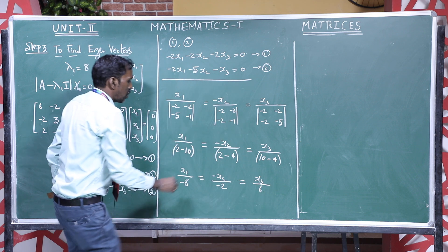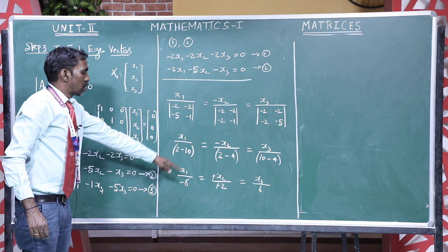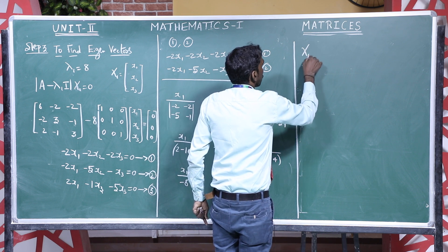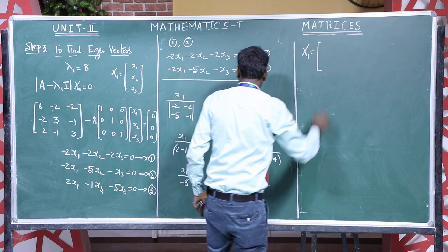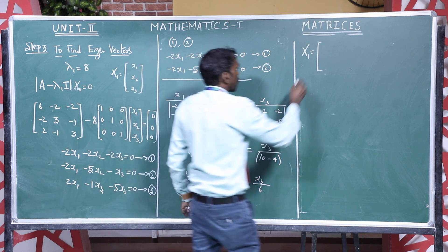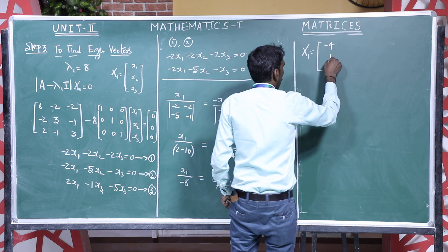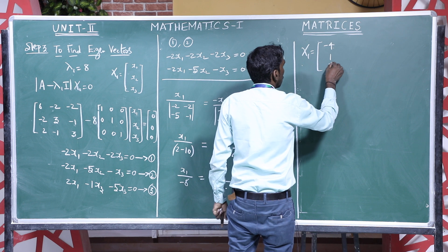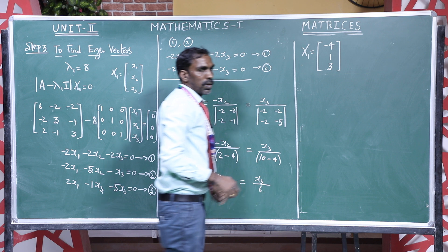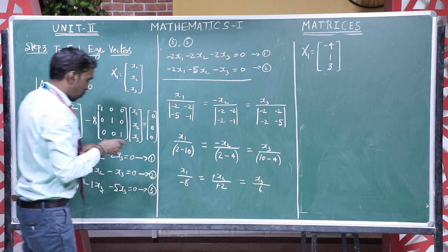The minus-minus cancels. So the eigenvector X1 corresponds to values minus 4, 1, 3. Therefore, capital X1 equal to the vector [minus 4, 1, 3]. This is our X1 eigenvector. Similarly, next we have to find out the X2 eigenvector using the same formula.